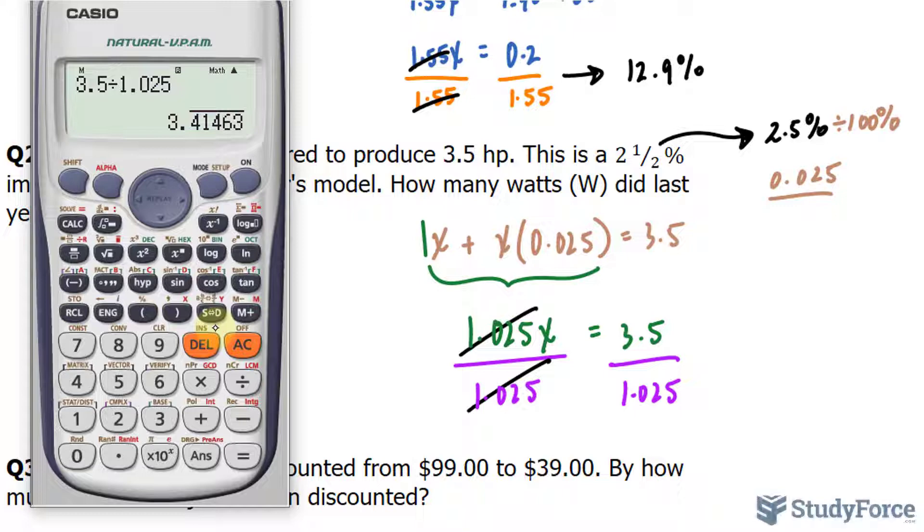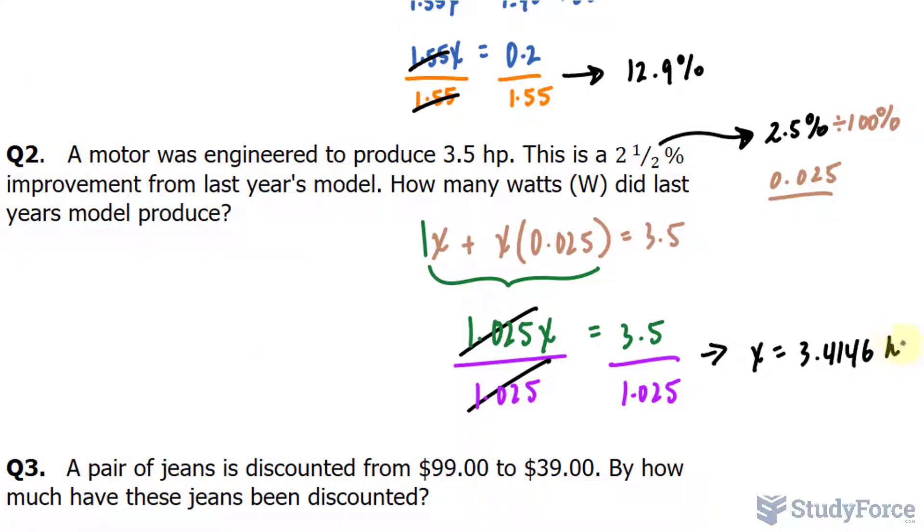That's last year's model, and the units are horsepower. Now, we have to convert this into watts, and you do need a conversion factor. Normally, a conversion factor will be provided to you by your teacher. But in case it's not, the conversion factor is 1 horsepower is roughly 746 watts.